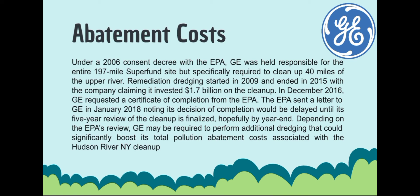Remediation dredging started in 2009 and ended in 2015, with the company claiming it invested $1.7 billion on the cleanup. In December 2016, GE requested a certificate of completion from the EPA. The EPA then sent a letter to GE in January 2018 noting its decision of completion would be delayed until its five-year review of the cleanup. Depending on the EPA's review, GE may be required to perform additional dredging that could significantly boost its total pollution abatement costs associated with the Hudson River, New York cleanup.